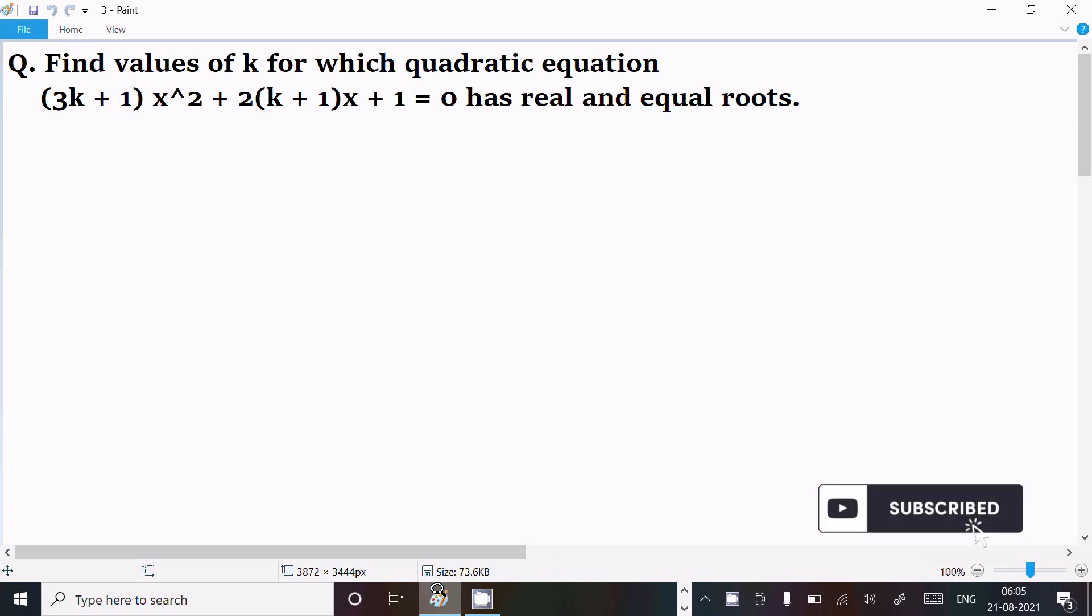Find the value of k for which the quadratic equation (3k+1)x² + (2k+1)x + 1 = 0 has real and equal roots. So let's see the answer. First we're writing the equation.